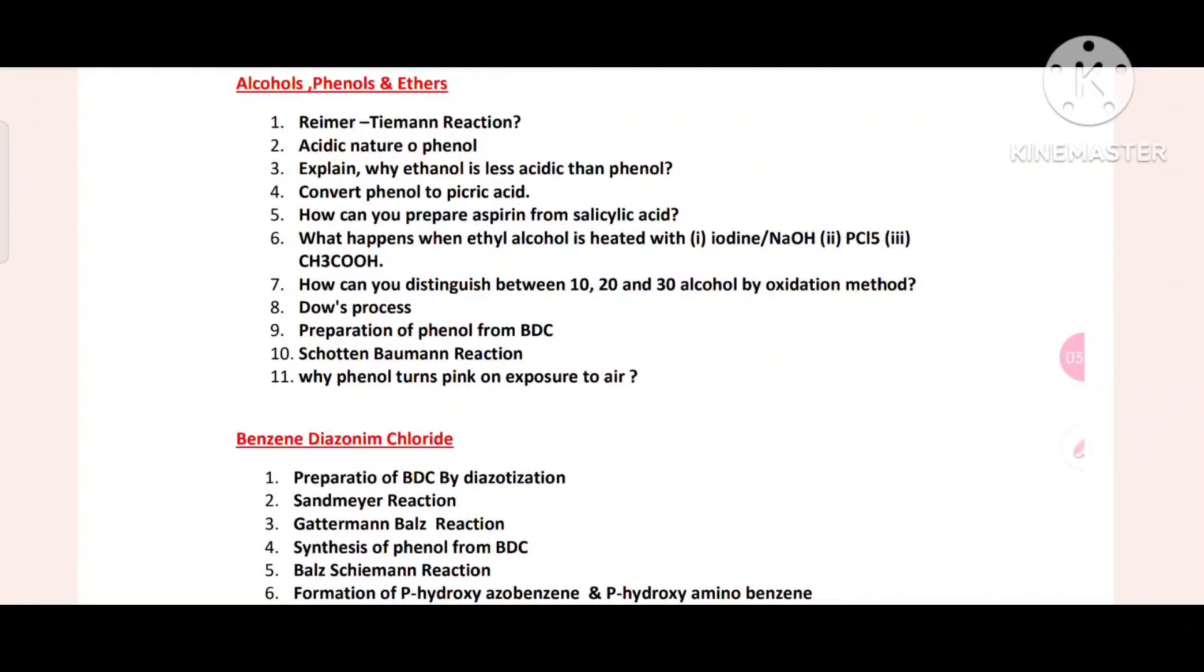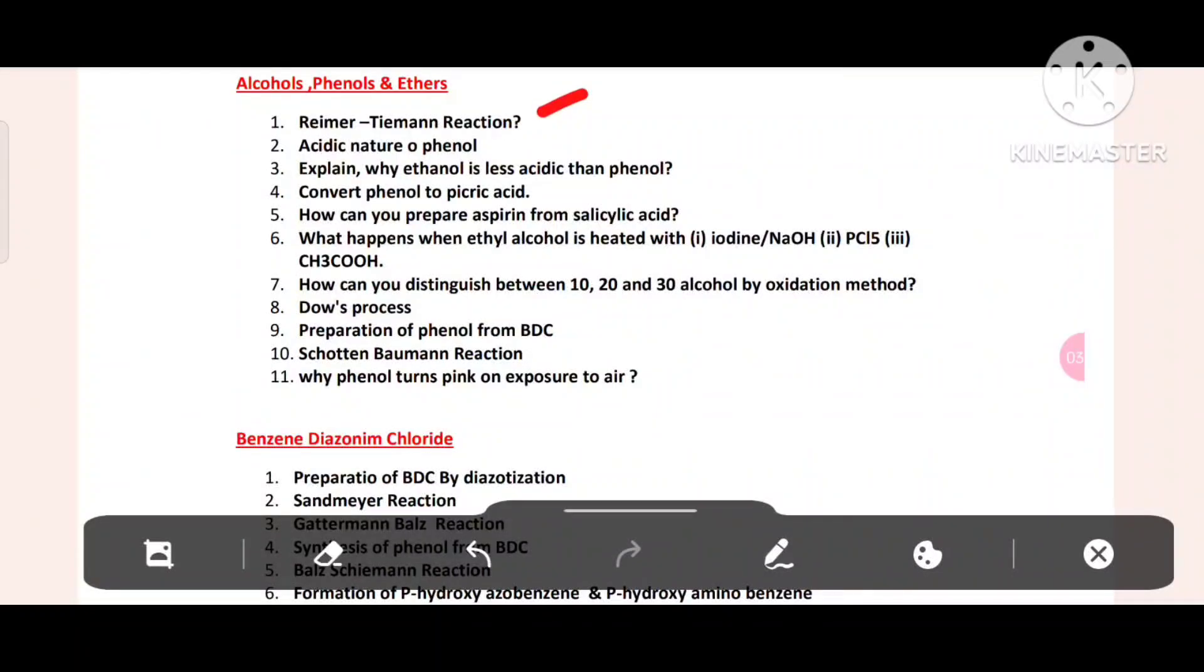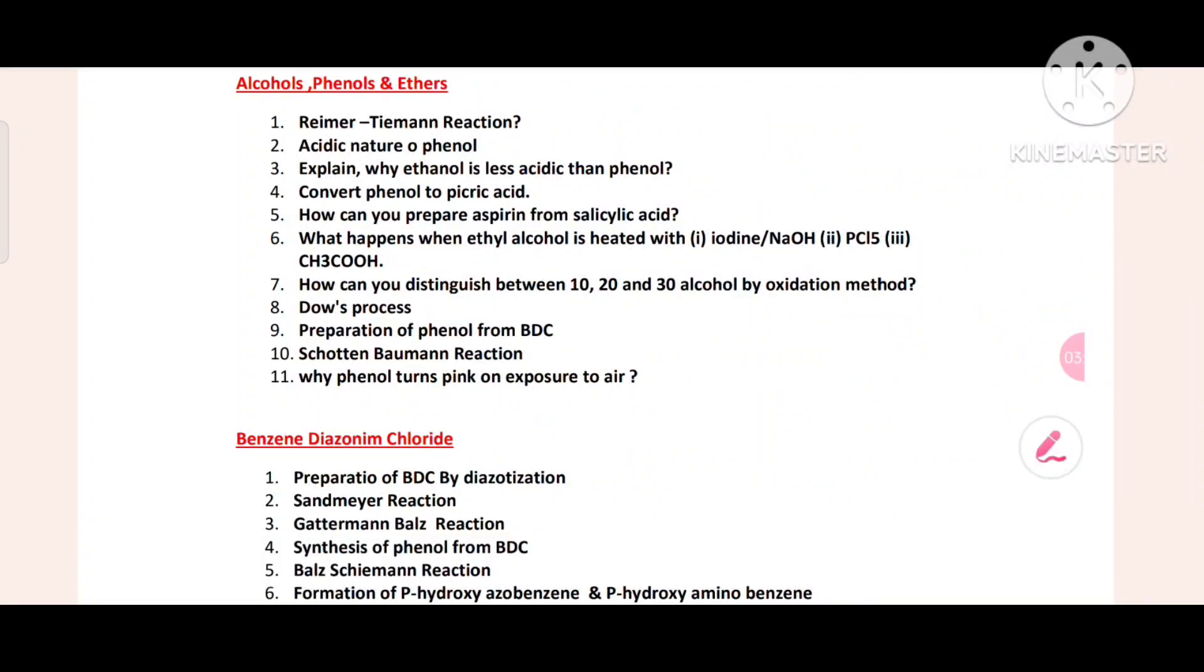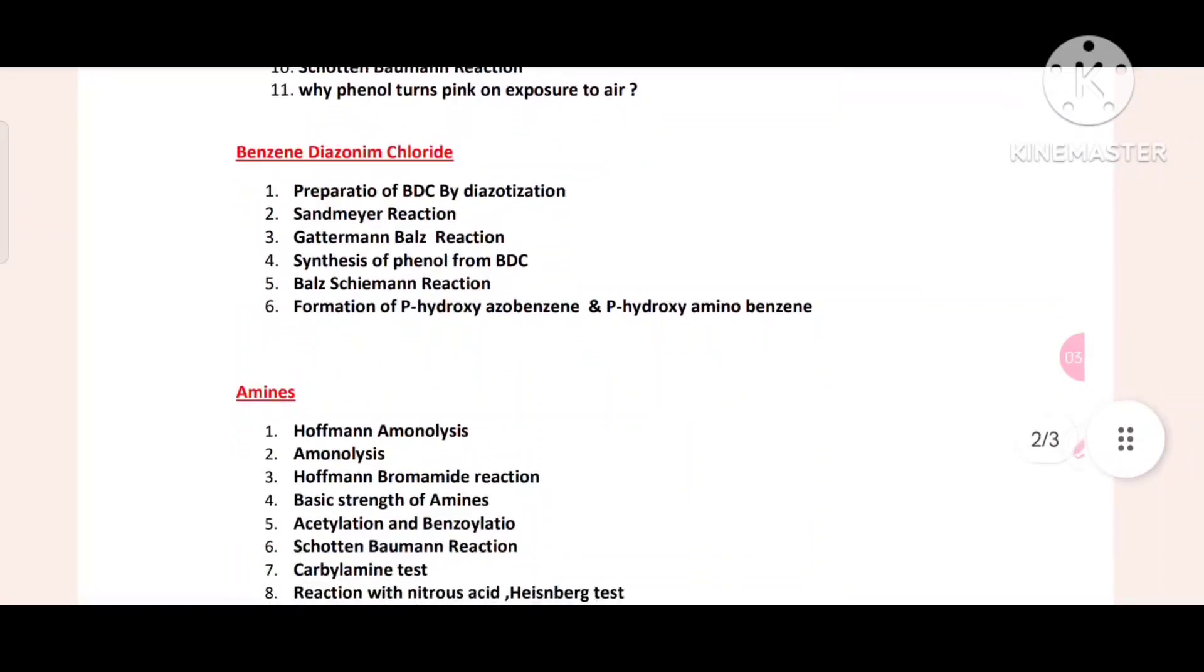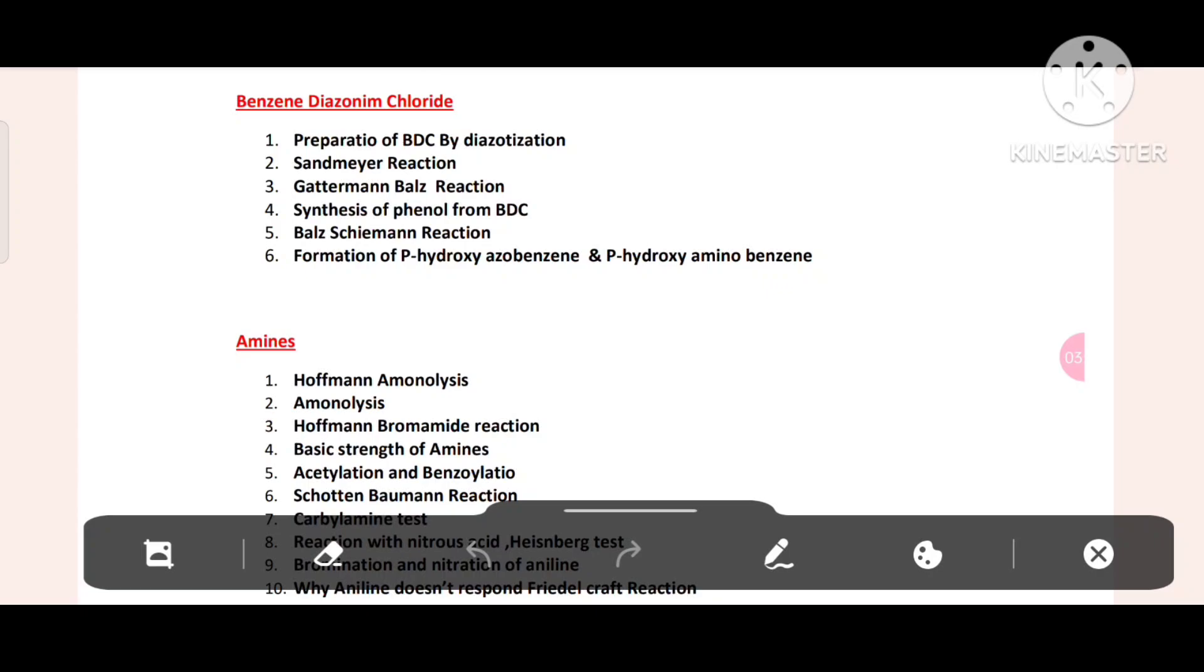Then comes alcohol, phenols and ethers. Reimer-Tiemann reaction. Then acidic nature of phenol. Explain why ethanol is less acidic than phenol. Convert phenol to picric acid. How can you prepare aspirin from salicylic acid. What happens when ethyl alcohol is heated with iodine, NaOH, PCl5, CH3COOH. How can you distinguish between 1°, 2°, 3° alcohol by oxidation method. Dow's process, preparation of phenol from BDC. Schotten-Baumann reaction. Why phenol turns pink on exposure to air. Preparation of BDC by diazotization.